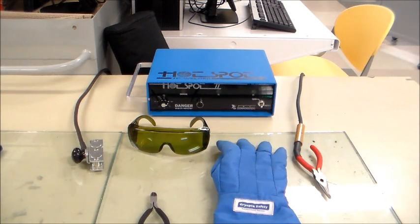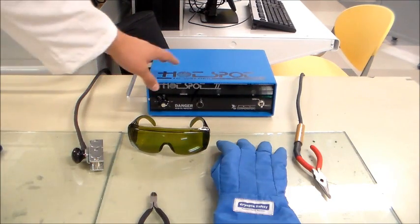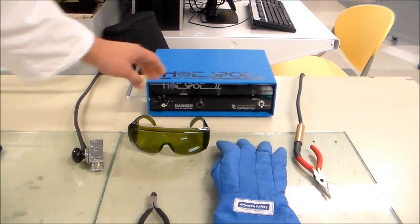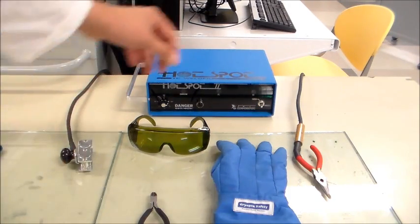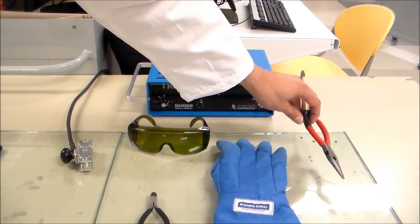In this video we are going to learn how to operate this Hot Spot TC welder. This equipment is conformed by the control console, the negative or ground end, and the positive end.